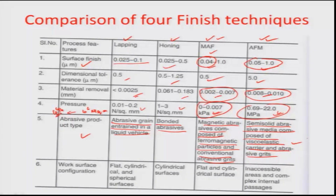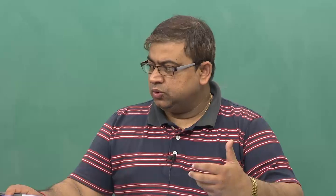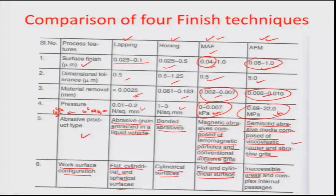That is how we compare the abrasive products used across these processes. Looking at work surface configuration and accessibility: lapping and honing find applications in flat, cylindrical, and spherical surfaces, while honing is probably only for cylindrical surfaces. MAF works on flat and cylindrical surfaces, but with proper tool path planning it can work on any complex contour or surface — groups within India have demonstrated MAF being carried out on complex knee joints or hip joints. The AFM process is mostly suited to inaccessible areas and complex internal passages.